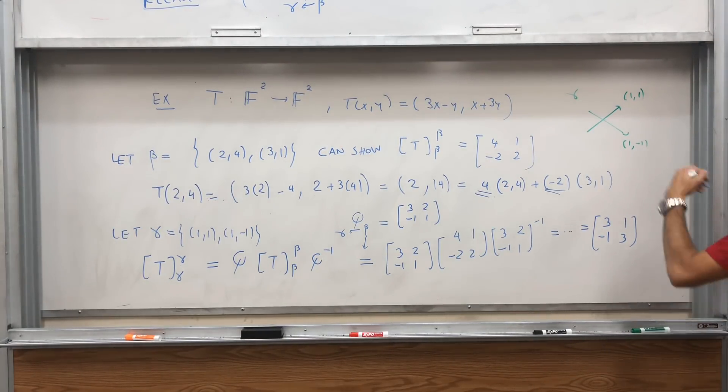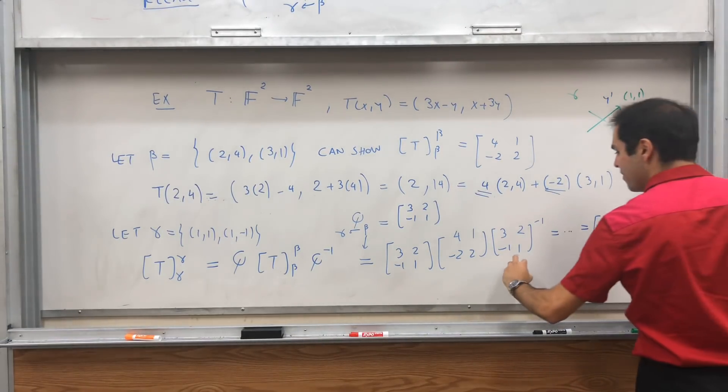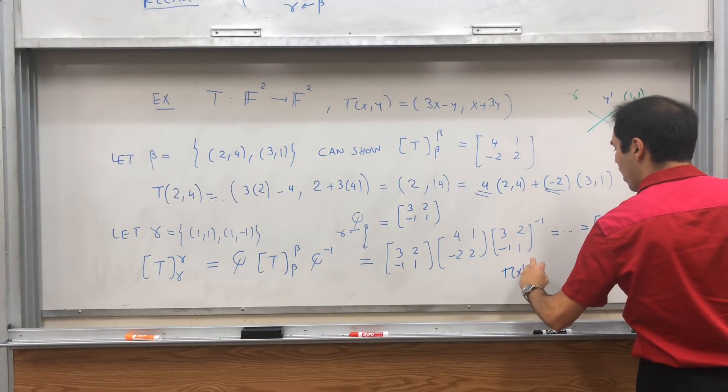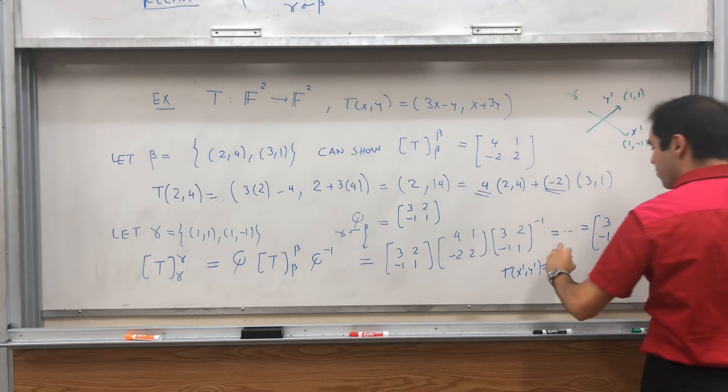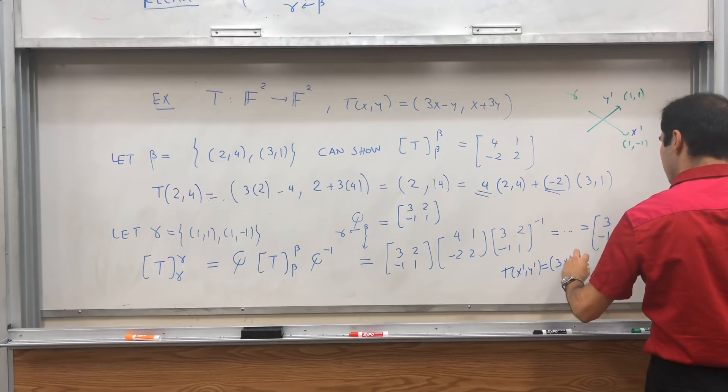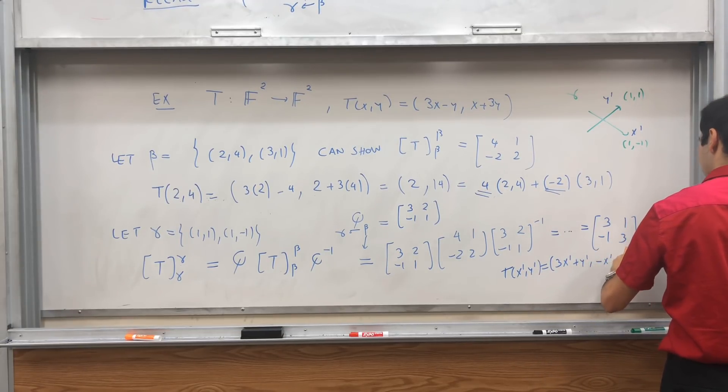T becomes, so if this is the new X prime and this is the new Y prime, then T of (X prime, Y prime) is just this matrix times (X prime, Y prime). So 3X prime plus Y prime and -X prime plus 3Y prime.